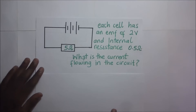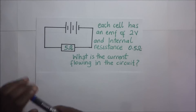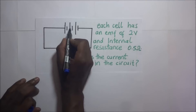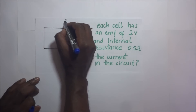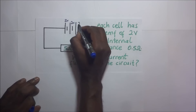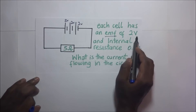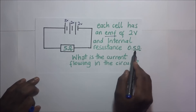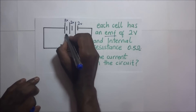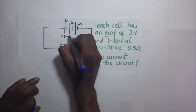On this question, they're telling us that each cell has an EMF of 2 volts. How many cells do we have here? We have one, two, three cells. Each cell has an EMF of 2 volts and an internal resistance of 0.5 ohms, so each of these has an internal resistance of 0.5 ohms.